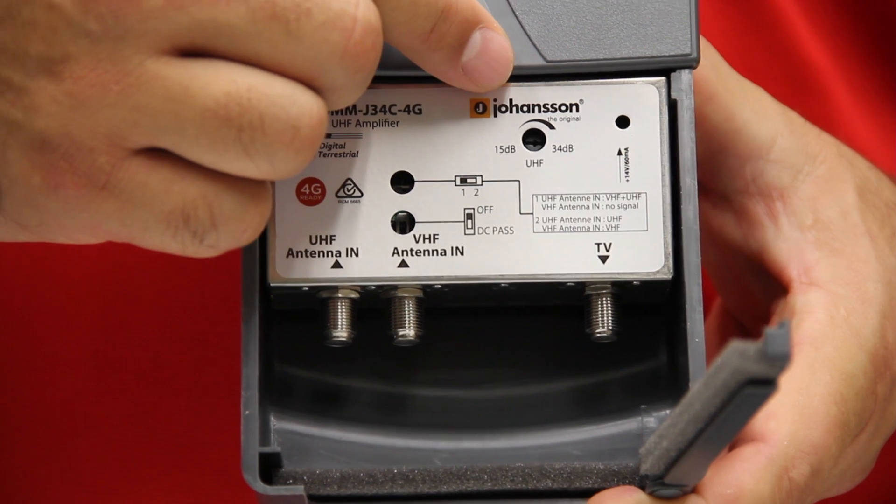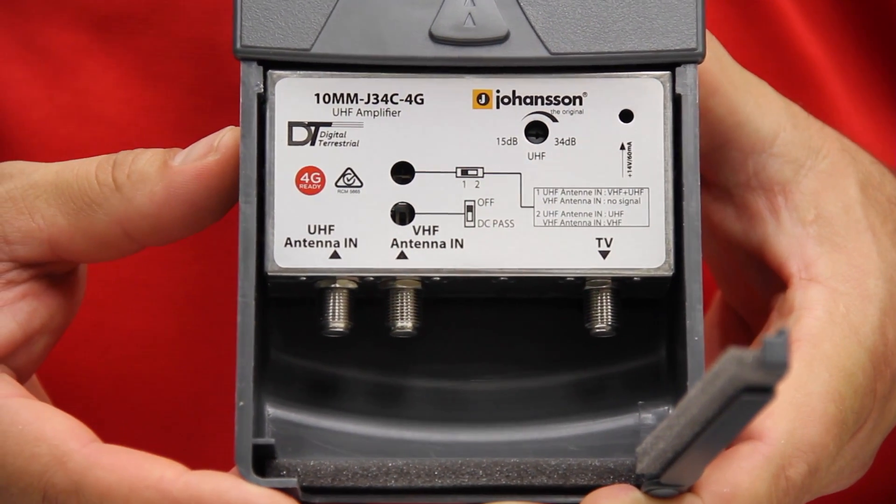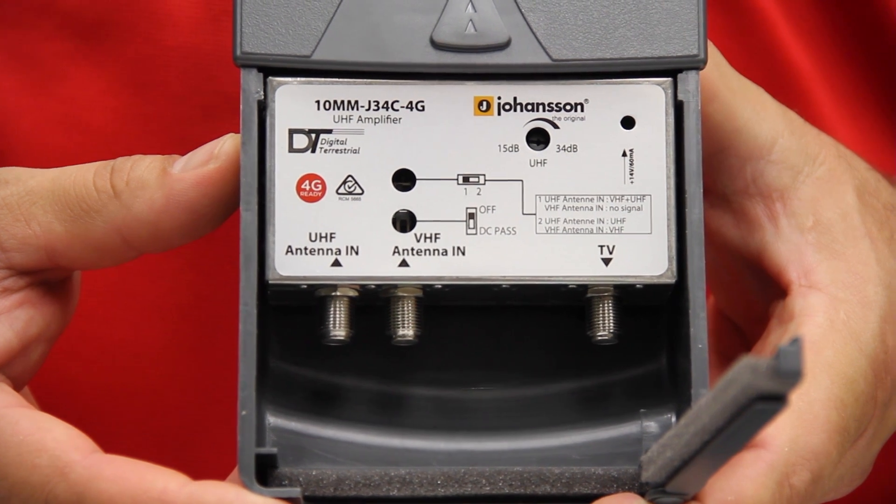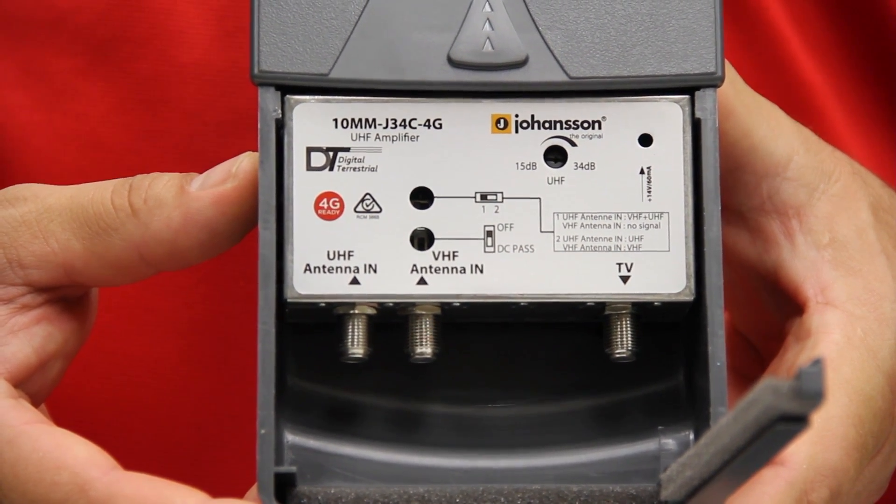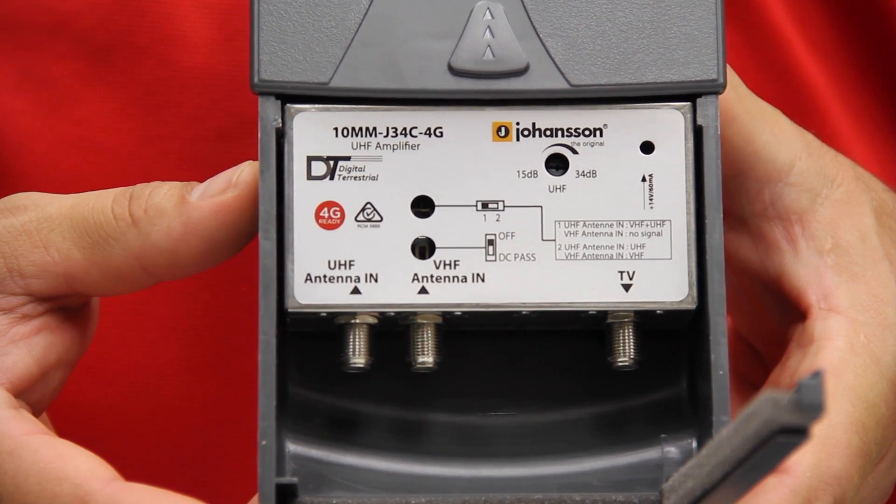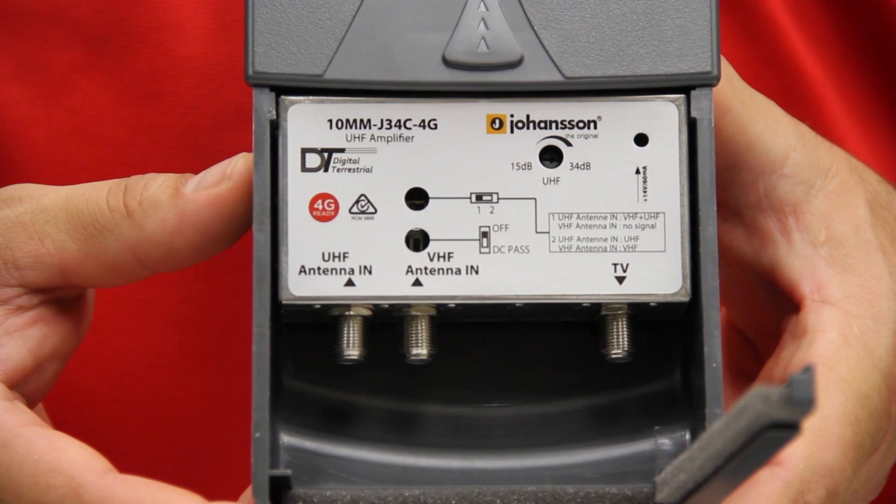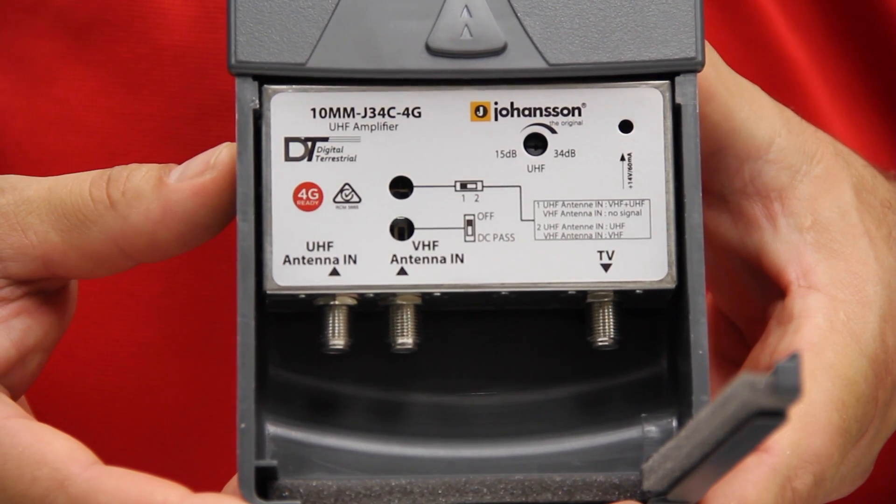It has a gain adjustment of 19 dB for UHF to adjust to the desired output level and insertion loss of 0.5 dB for VHF. It has a DC power pass switch to pass power through from the output to the input to power cascading amplifiers. It has a built-in low-pass 4G filter at 694 MHz.